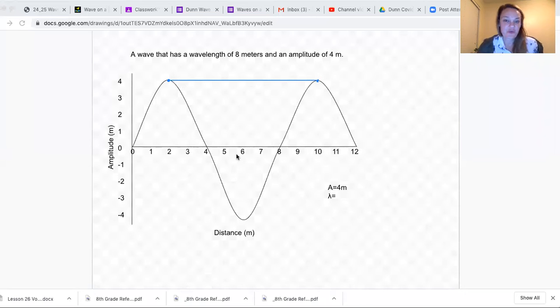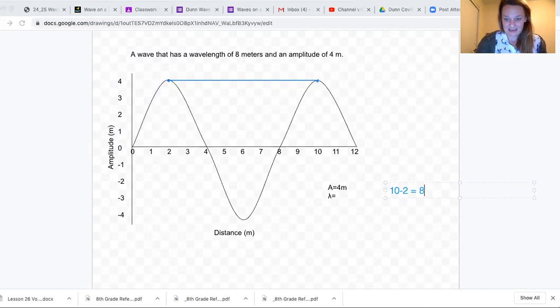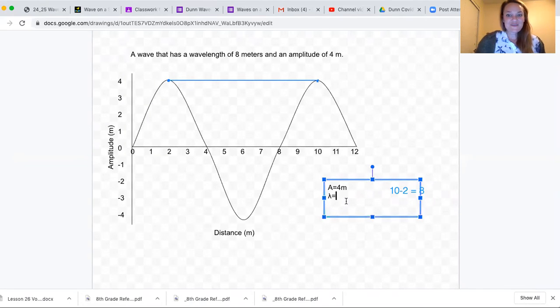To finish calculating wavelength, you're going to go, okay, so this point falls at 2 meters and this point falls at 10 meters. So the wavelength is the difference between 2 and 10. So 10 minus 2 is equal to 8. That means that the wavelength is equal to 8 meters.